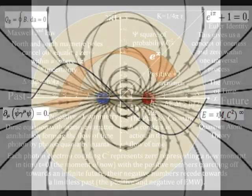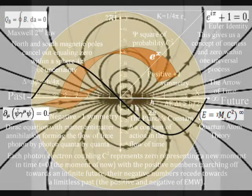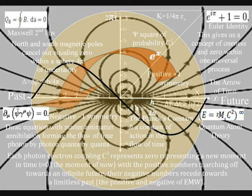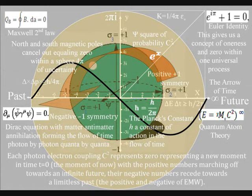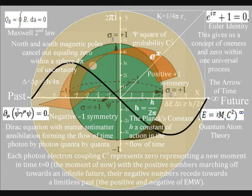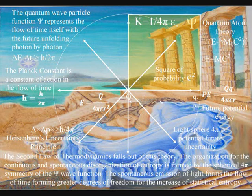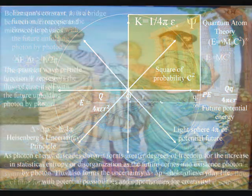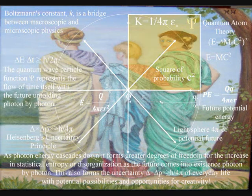On the lower left-hand side of the diagram we have Dirac's equation, which also equals 0, representing zero time, with matter-antimatter annihilation forming the magnetic moment or dipole moment — with the future coming into existence photon by photon, quantum by quantum. This magnetic moment is formed when light waves interact with matter to form a photon-electron coupling, and the electron is the most spherical object in the universe. This spherical symmetry forms the low entropy that creates the possibility for the continuous increase in entropy — or disorganization — that we have in the second law of thermodynamics as time unfolds. As photon energy cascades down, it forms greater degrees of freedom for the increase in entropy, forming the uncertainty of everyday life.